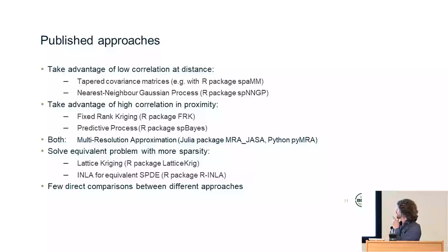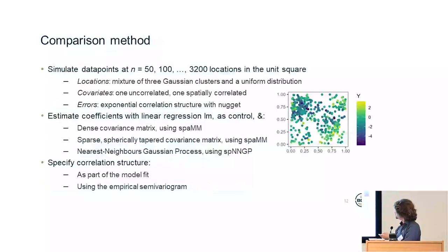I'll be looking at the first ones. There's not many comparisons between these different approaches, so I decided to have a look myself. So to do that, we simulate points which are located in the unit square, a mixture of clusters and the uniform distribution to have a dataset which displays some of the features of real datasets where sampling efficiency can be improved.